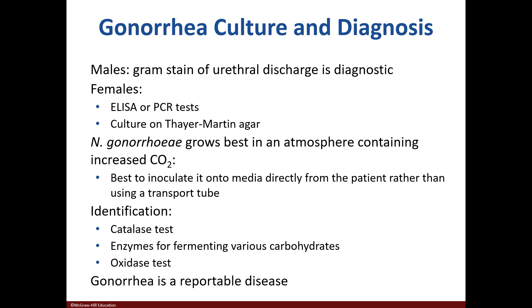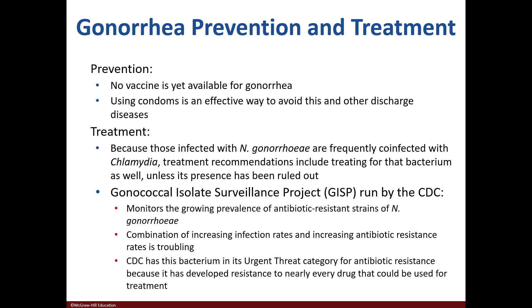In males, gonorrhea can be diagnosed by a gram stain of discharge. Females can be diagnosed by ELISA, PCR, or growth on chocolate agar. Gonorrhea must be grown in a carbon dioxide-rich environment and can also be identified via a catalase test, oxidase test, or other biochemical tests. Prevention is achieved by using protection. Most often, individuals are infected with gonorrhea and chlamydia at the same time. Treatment is with doxycycline or azithromycin. This microbe is on the CDC's urgent threat list as it has developed extreme resistance.